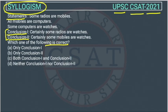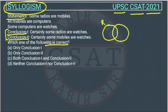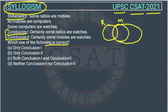The first statement is: some radios are mobile. This is a Venn diagram of radio — some radios are mobile. The second statement is: all mobiles are computer. This is a Venn diagram of mobile. So all the mobiles are computer.